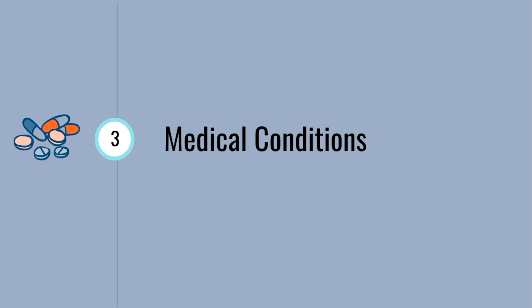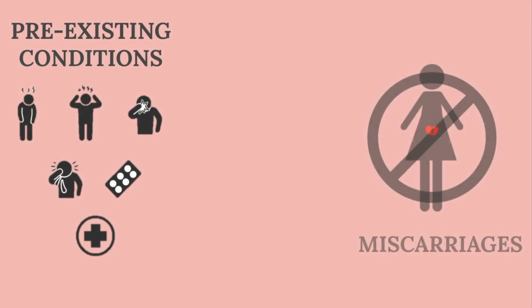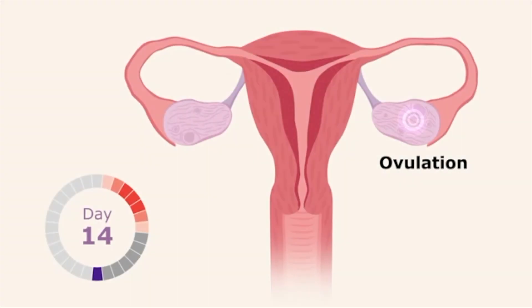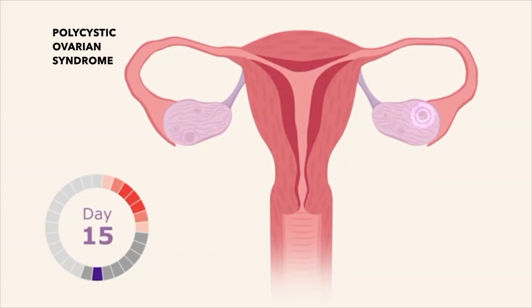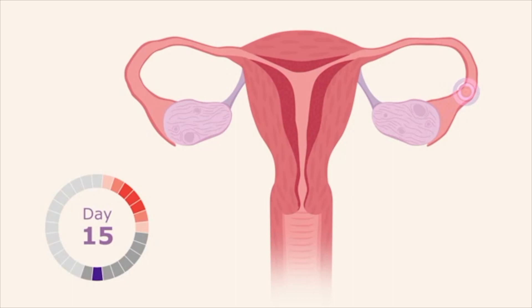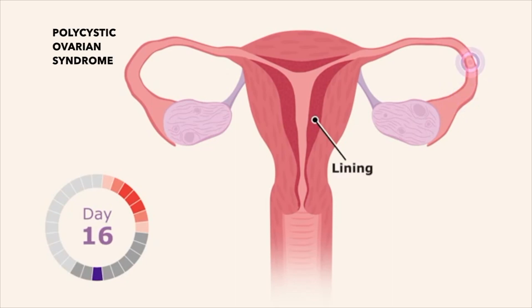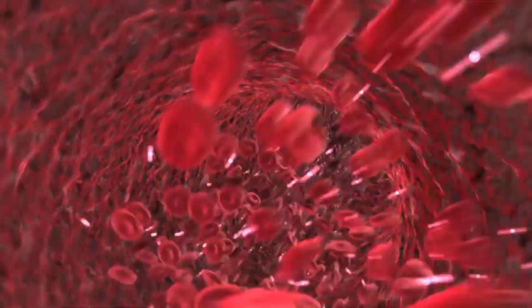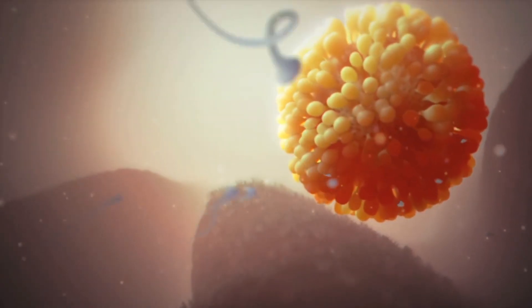Certain medical conditions can lead to miscarriages. Keep in mind that not all medical conditions lead to miscarriages, and not all miscarriages happen because of pre-existing medical conditions. A common medical condition women have is polycystic ovary syndrome, also known as PCOS. PCOS is a hormonal condition in which women can have an irregular or prolonged menstrual period, failing to regularly release eggs. They are also known to have higher androgen levels, which are a group of male hormones. The imbalance in hormones and high levels of androgen can prevent the release of an egg, resulting in fewer opportunities to fertilize eggs.